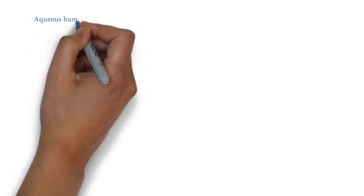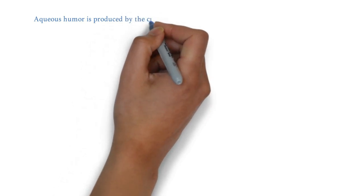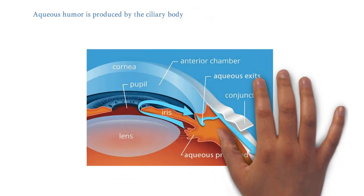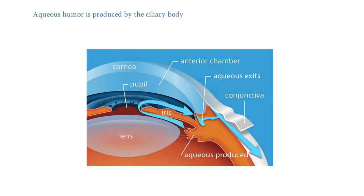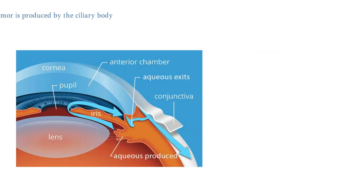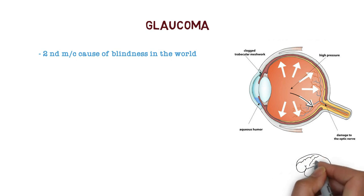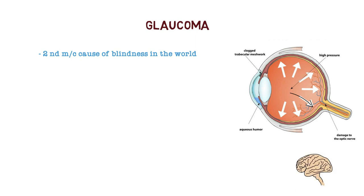We know that aqueous humor is produced by the ciliary body, which is secreted in the posterior chamber of the eye. It nourishes the lens and cornea and leaves via the angle of the anterior chamber. If there is an imbalance of inflow and outflow, if the angle is occluded, this results in accumulation of fluid within the eye, resulting in raised intraocular pressure. This raised intraocular pressure is going to cause irreversible damage to the optic nerve, and once there is damage to the optic nerve, the communication between the eye and the brain will stop, causing permanent loss of vision and perception.